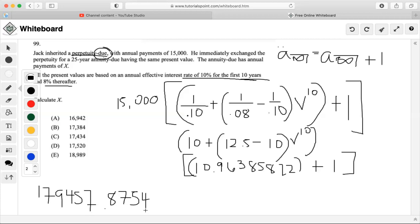Now next thing is the annuity. He made the exchange of perpetuity for a 25-year annuity due having the same present value. So it has equal payments of X. Based on what is happening with the effective rates, it's an annuity due, so it's going to be payments of X and it's going to apply to the annuity due of the first 10 years at 10%.